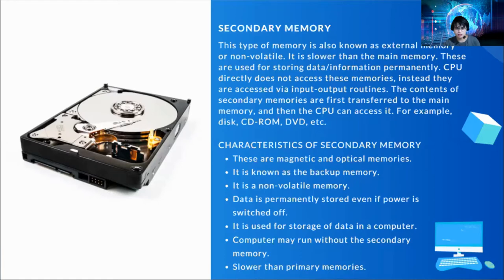What are the different characteristics of secondary memory? These are magnetic and optical memories. This is known as backup memory. It is non-volatile, meaning the data is permanently stored even if the power is switched off. It is used for storage of data in a computer, and a computer may run without a secondary memory. It is slower than primary memory.